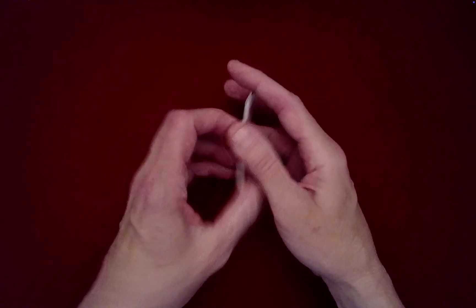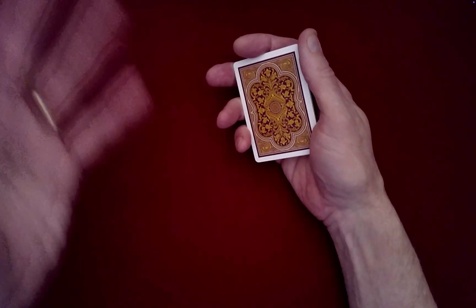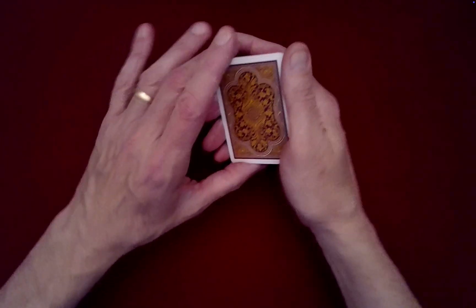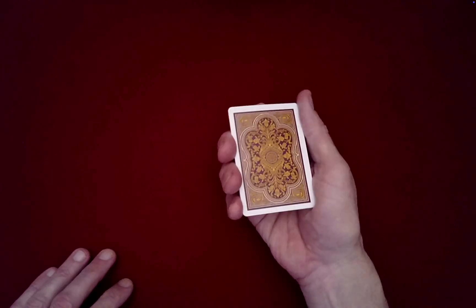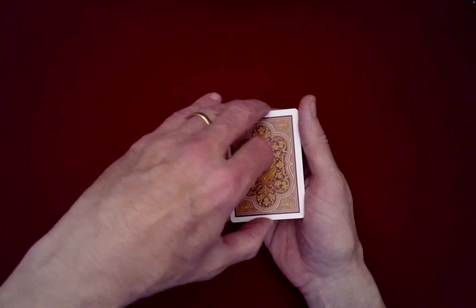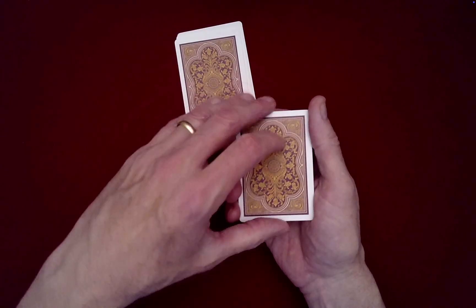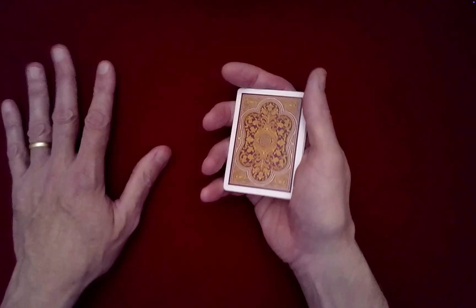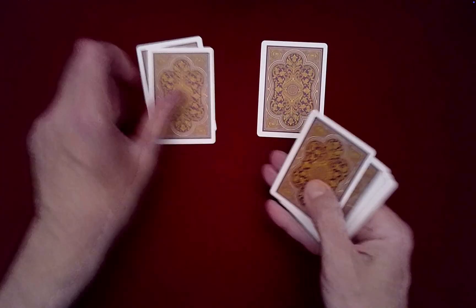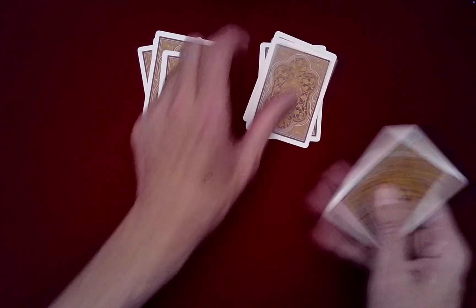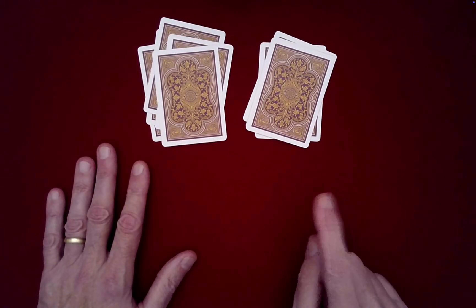What we're going to do is randomize these with significant input from you. The first thing I want you to do is just randomly cut the packet wherever you would like. The spectator would just cut the cards wherever they would like, and then we deal out into two piles with random stacking decided by you.